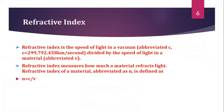Now let us see refractive index. It is the ratio of the speed of light in vacuum to the speed of light in a material. Therefore, refractive index can be represented as n = c / v, where c is the speed of light in vacuum and v is the speed of light in the material.